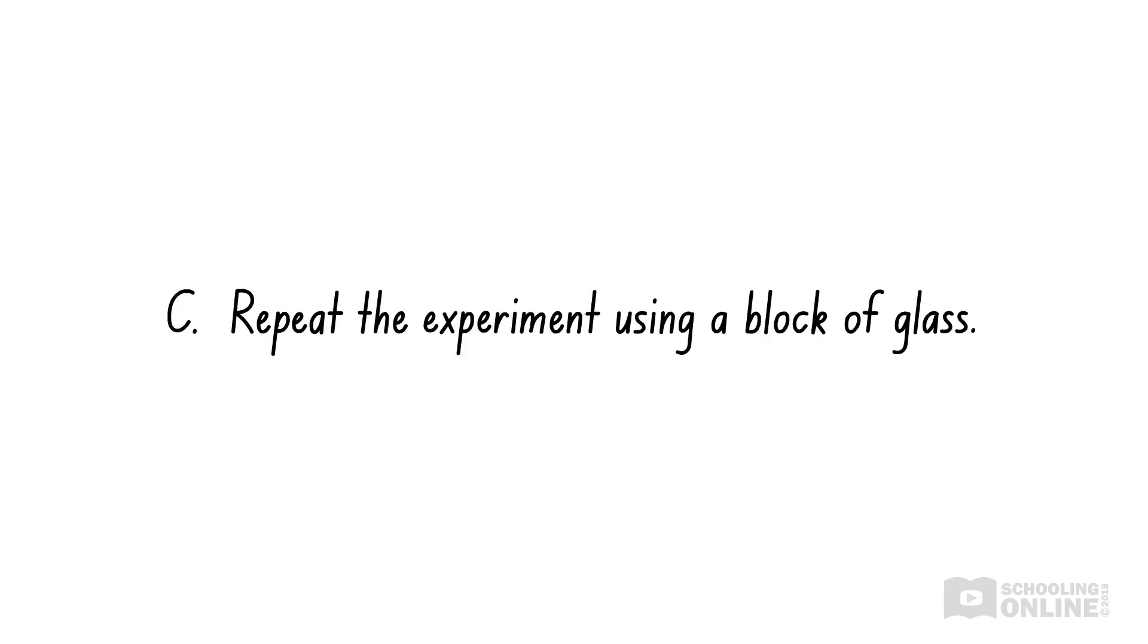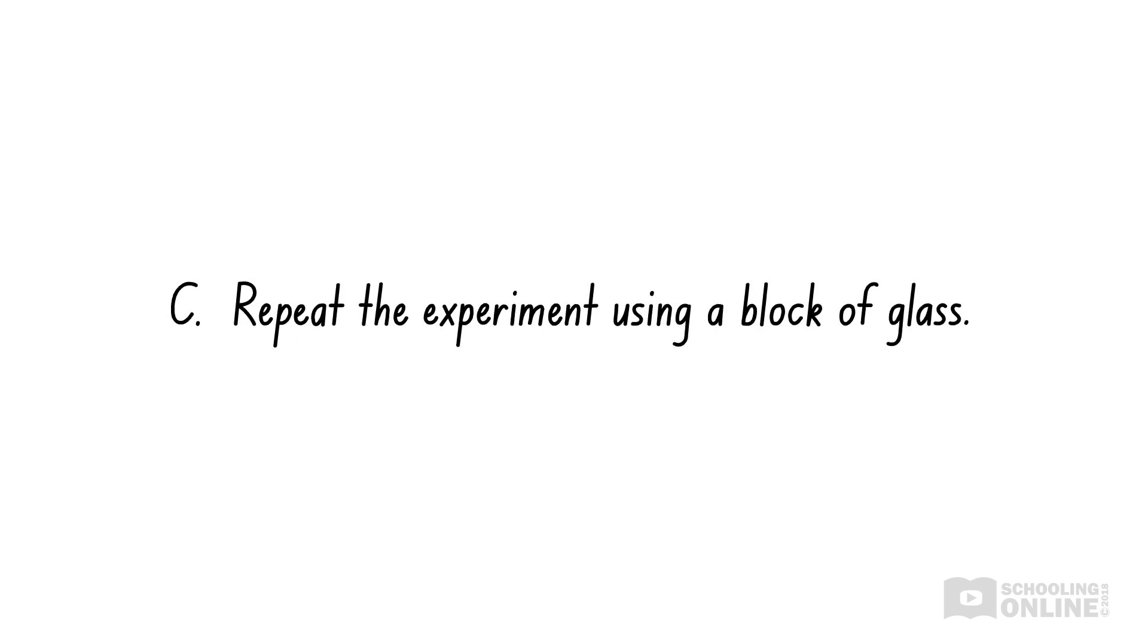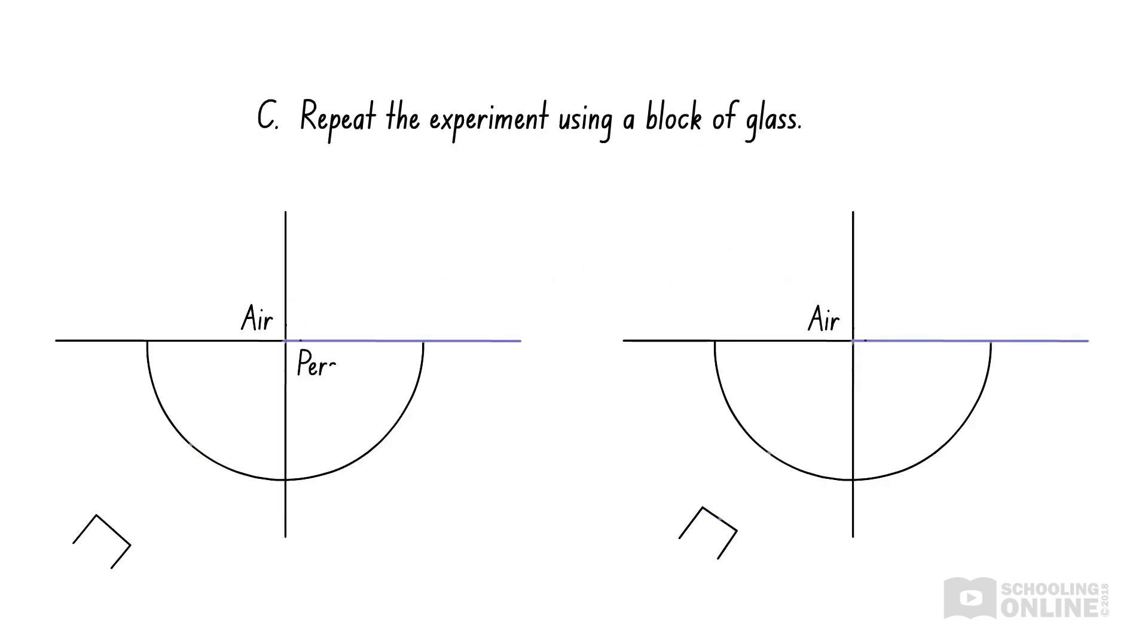Option C suggests that Anna should repeat the experiment using a block of glass. However, glass and perspex are different materials, so their critical angles might be different. If she repeats the experiment with glass, she won't be investigating the critical angle of perspex, so her results will no longer address the aim of her experiment. Hence, this does not improve reliability and option C is incorrect.